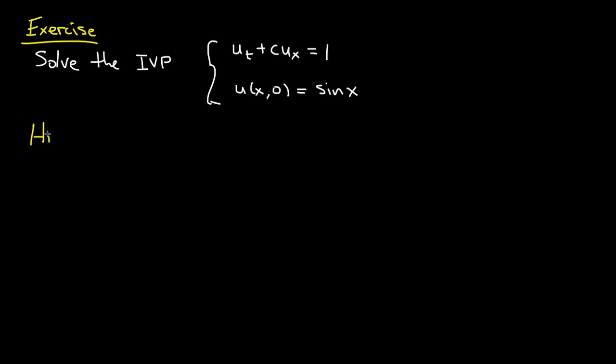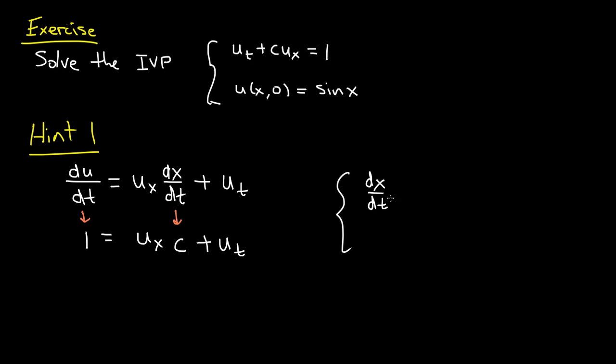So use the method of characteristics to solve this equation. And go ahead and pause the video now and I'll give you a hint after the pause. Alright, hint 1. Remember the general equation that describes the way that u changes along the characteristic lines. That's du/dt is u_x dx/dt plus u_t. And so to compare it with this guy, I would have essentially the du/dt would be a 1, and then u_x, and then the dx/dt would be a c plus u_t. And so my equations for the characteristic lines would be dx/dt equals c, and then I'd be left with this du/dt is equal to 1 instead of 0.